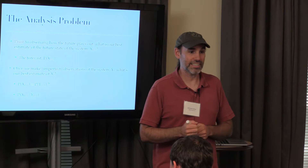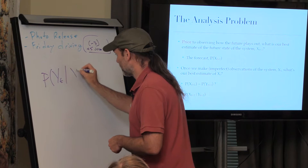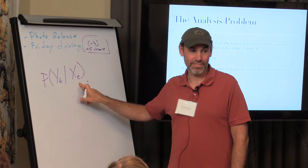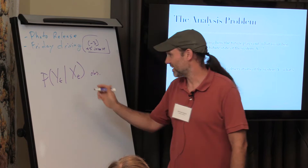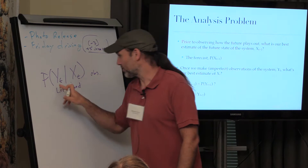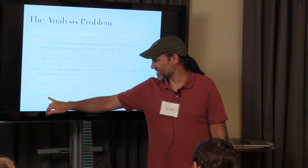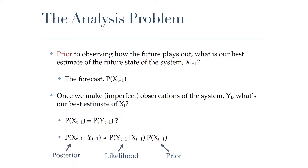What we can calculate is the probability of observing some real-world data given some state variable. What do we call this? That's the likelihood—it's the observation model. So if I have a likelihood for Y given X, but what I really want is X given Y, how do I get from one to the other? Bayes' theorem. We need Bayes' theorem. We need a prior and a likelihood to give us this updated posterior. The likelihood in this case is mostly that observation error model.